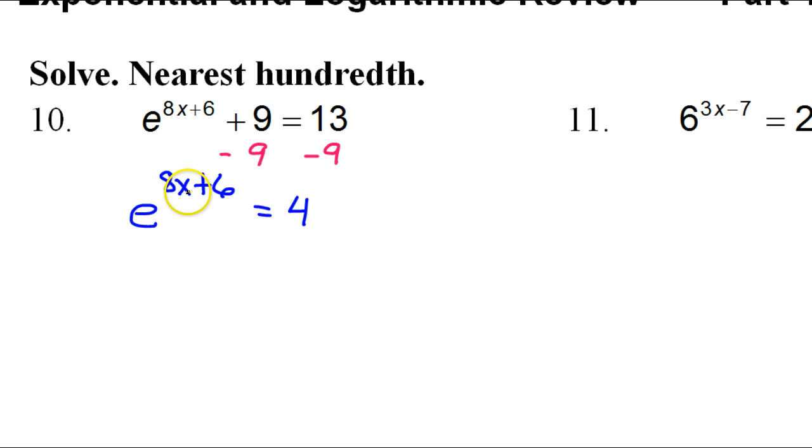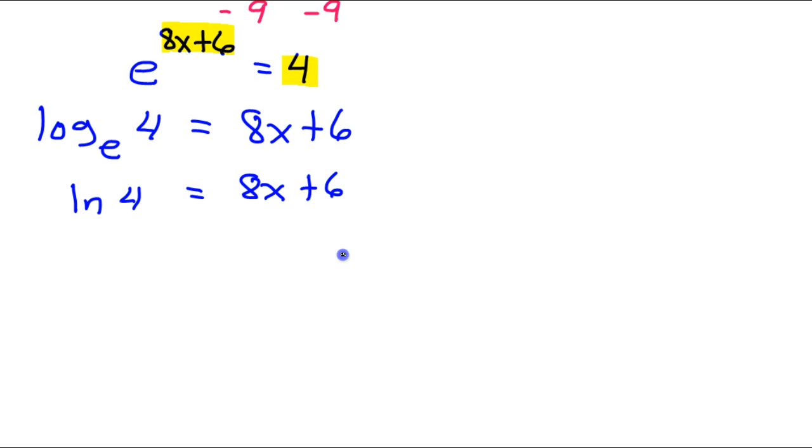Now, to get at the exponent, we need to rewrite this in log form. If you were careless, you might write log base e and then just switch these like we always do. But we would never write log base e of 4 like this. Log base e is the natural log, so we write ln of 4 is equal to 8x plus 6, and then we'll solve this for x by subtracting 6 from both sides.